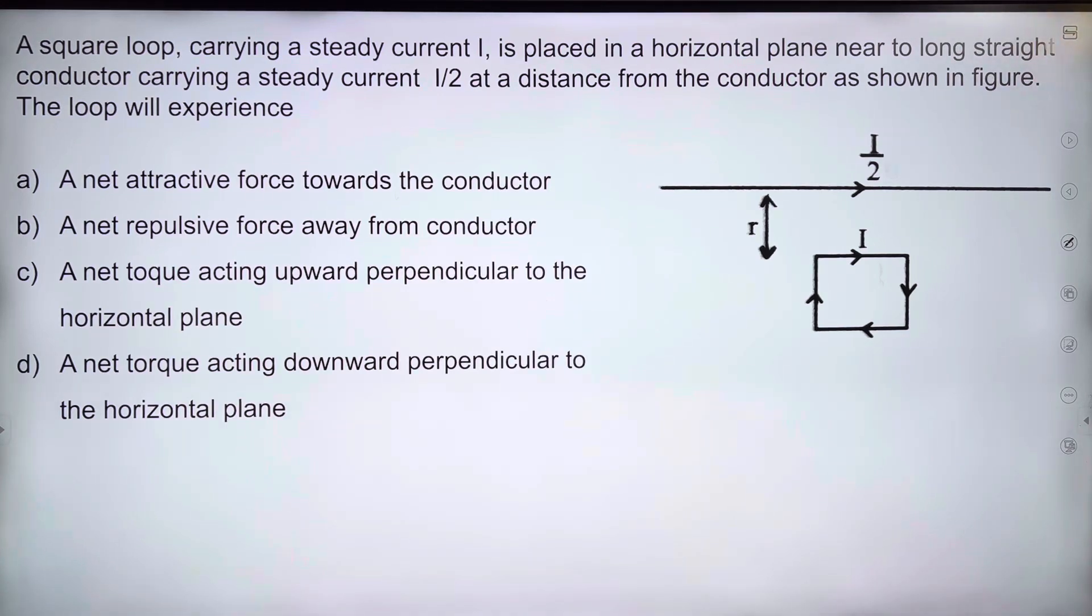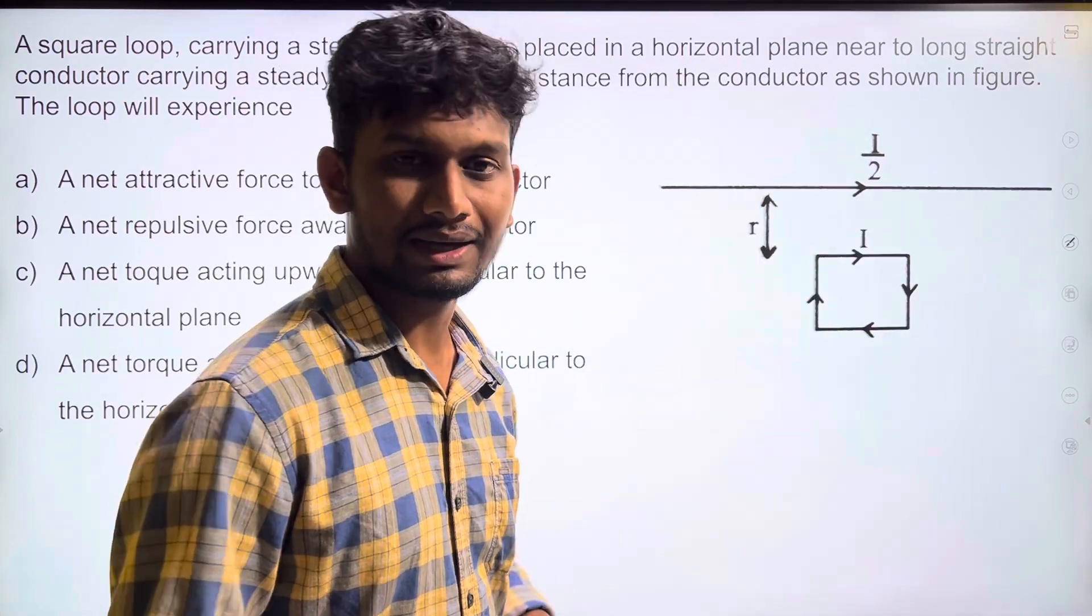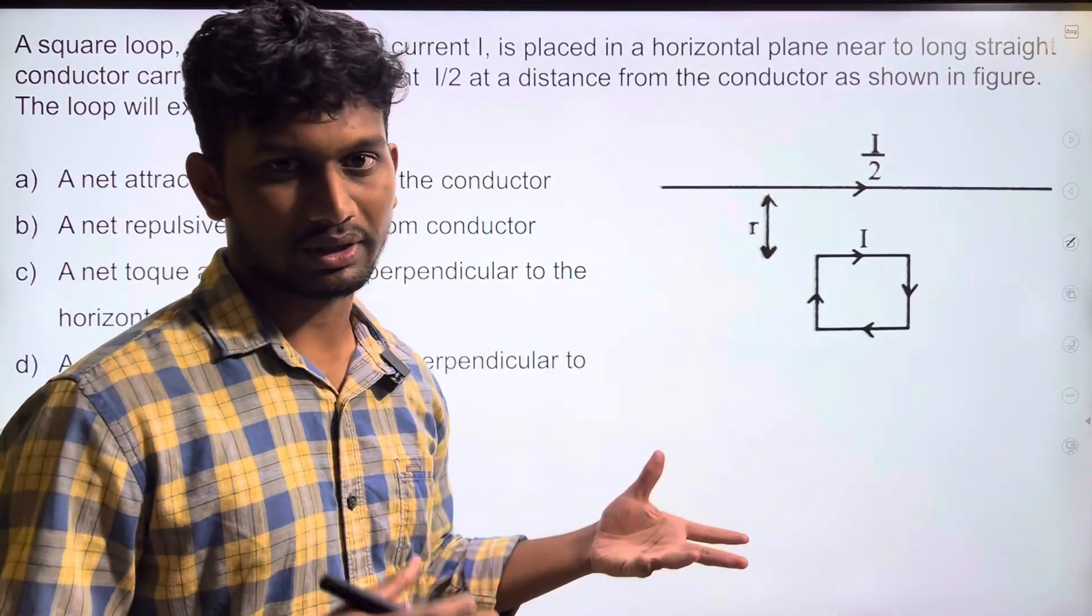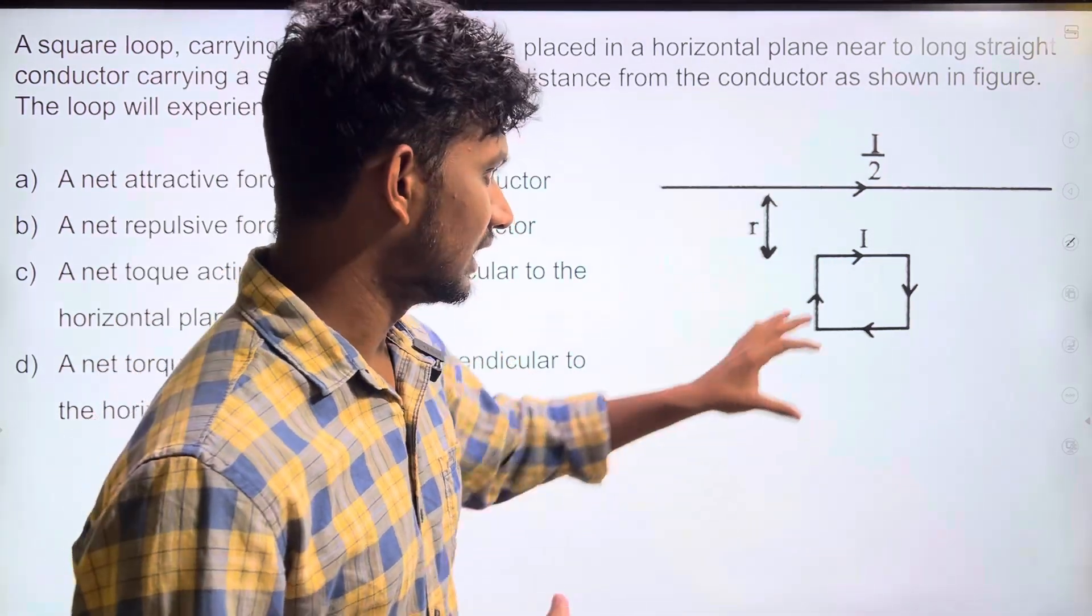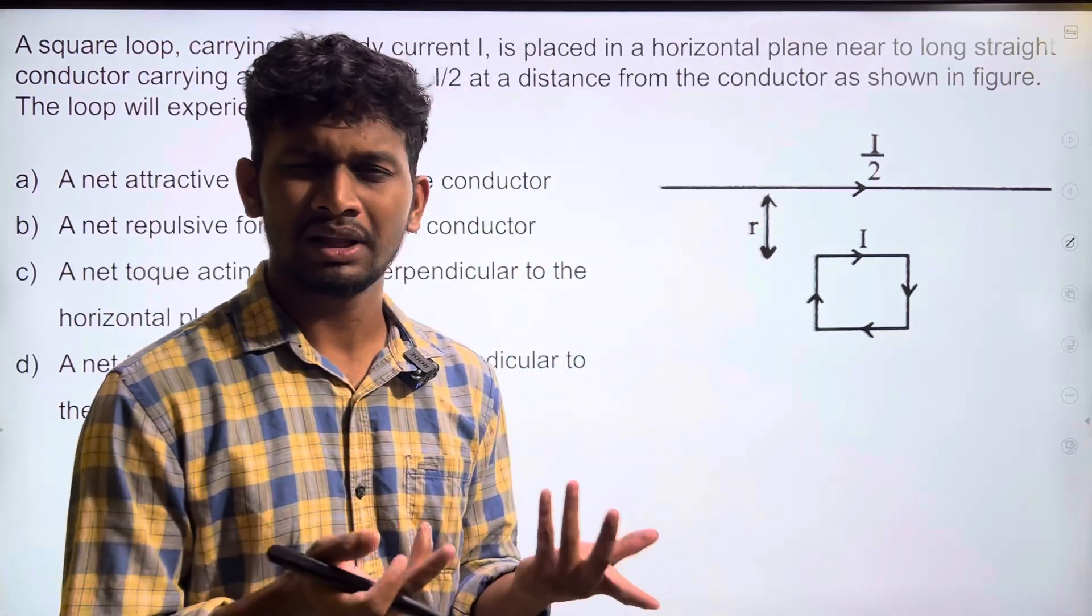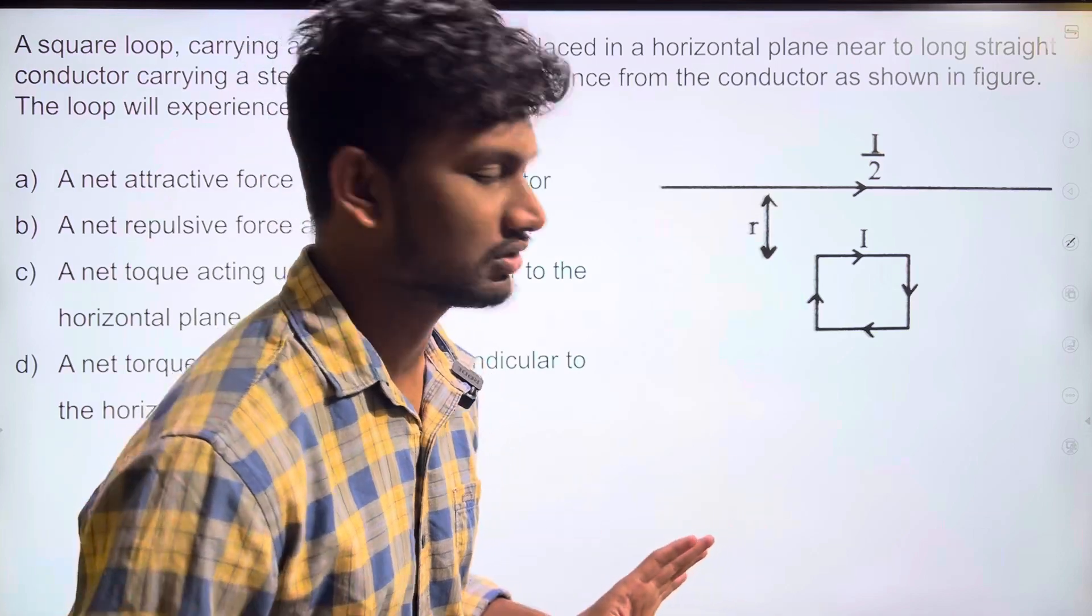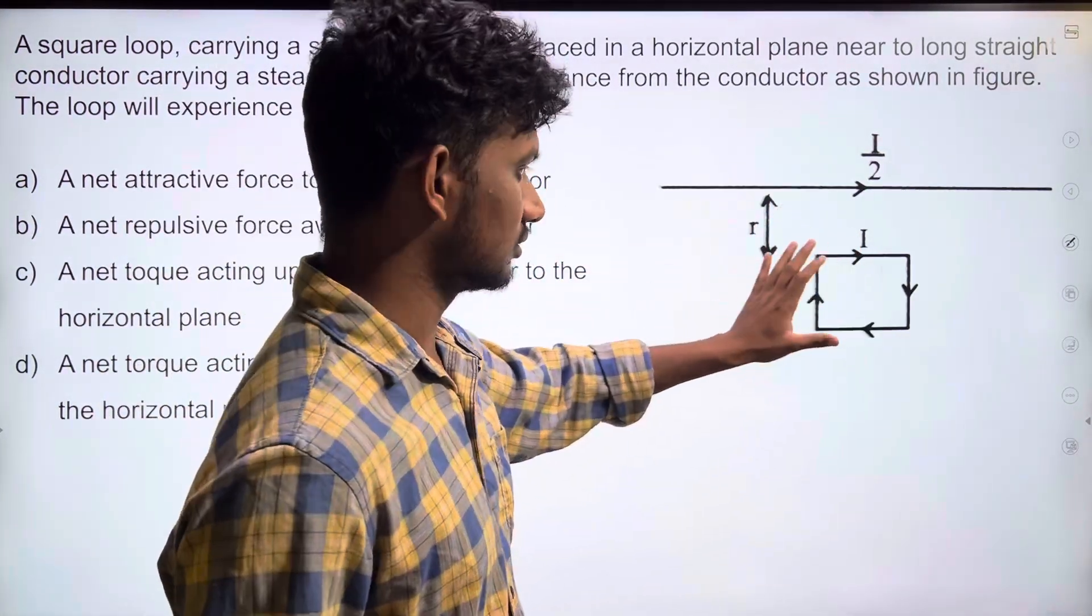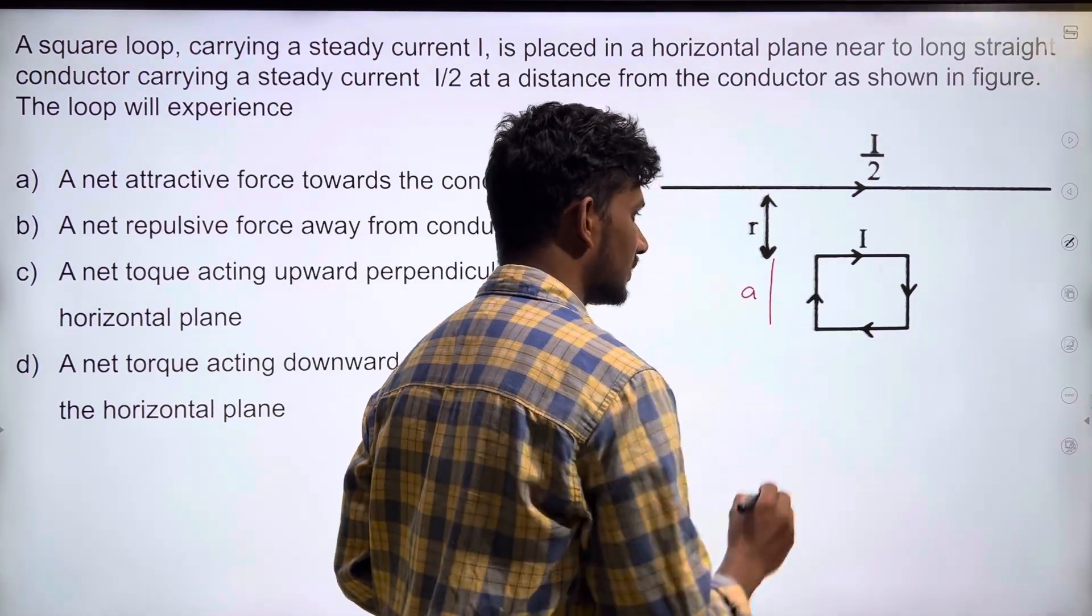That means there is a long straight conductor with current, and there is a square loop near it. That square loop is very important. The length of each side is the same, that is an important fact. The distance is R, we have to take the distance.